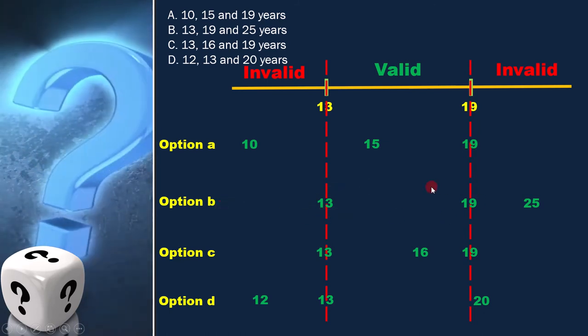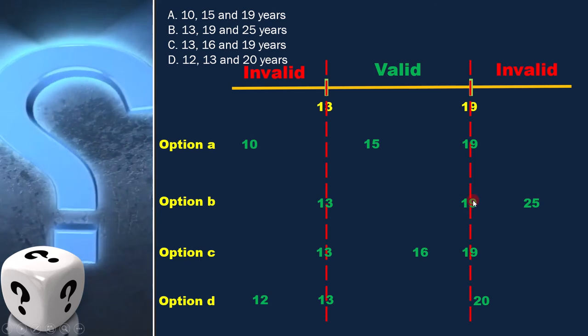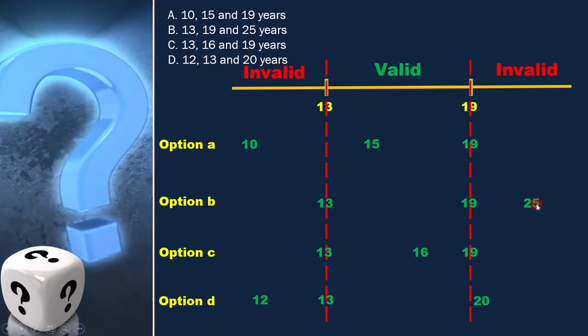In option B, 13 and 19 are in the valid range, and 25 is in the invalid range.